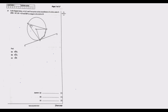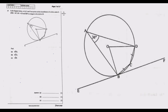To answer this question quickly, let me explain some key principles. Looking at the diagram, we can use the angle at the center theorem: the angle at the center is twice the angle at the circumference. So we can find angle BOD, which is 36 multiplied by 2, giving us 72 degrees.